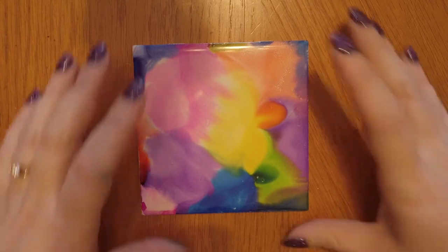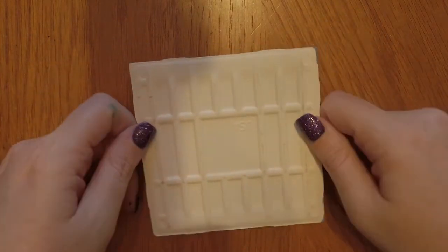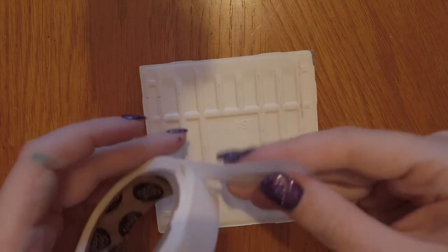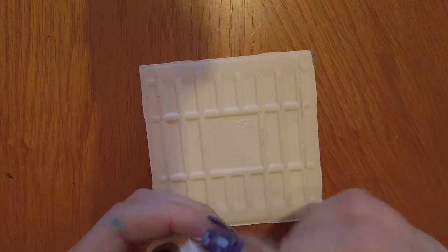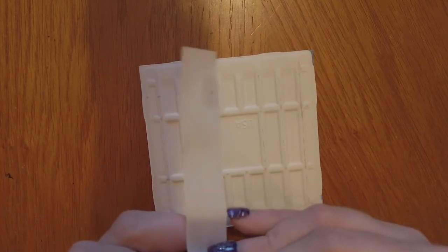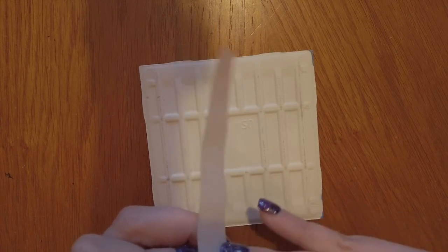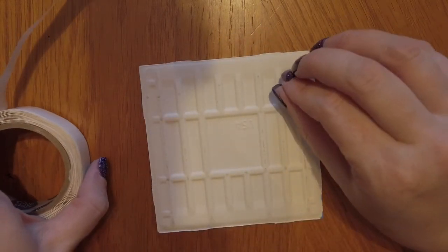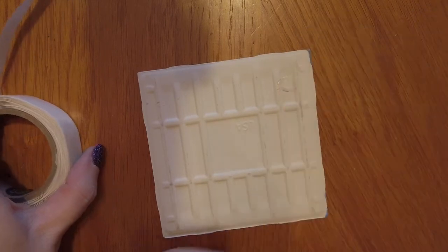Now that our tile is dry, let's add felt feet to the bottom. I'm using glue dots and squares of felt that I had left over from a previous project to make four square feet on the bottom of my tile so that it doesn't scratch up any surfaces.